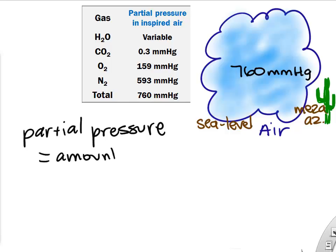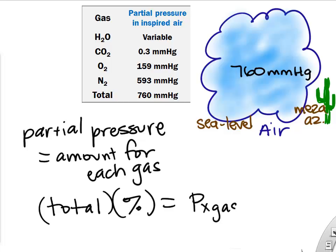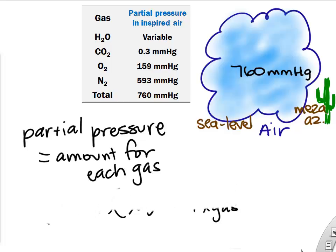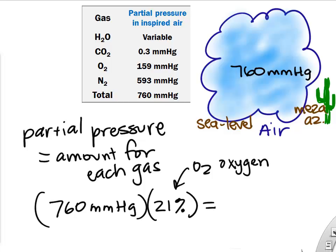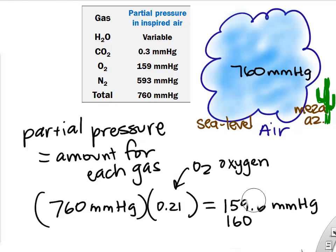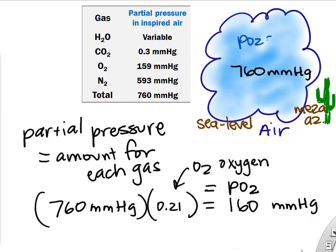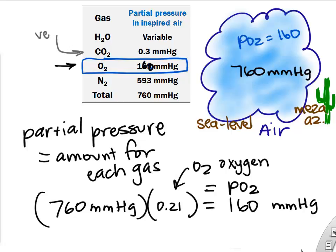At sea level, the air pressure is 760 millimeters of mercury. If you want to figure out the pressure of each individual gas, you simply multiply that value by the percentage of gas in the air. For oxygen, 21% of the air we breathe is oxygen. So we multiply 0.21 times 760 and we get about 160 millimeters of mercury. We call that the partial pressure for oxygen, or PO2. That's how we talk about the amount of oxygen in our body, in our blood, and in our air.